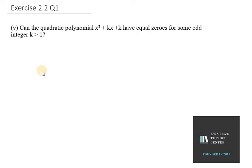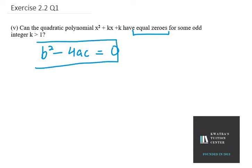The condition given is that they have equal zeros. You will learn in chapter 4 that whenever we have equal zeros, we use the discriminant, where b² - 4ac equals 0. So here we have b² - 4ac = 0.